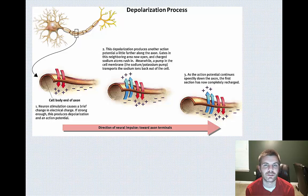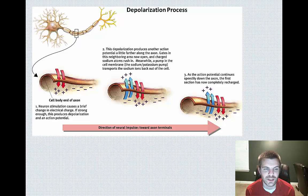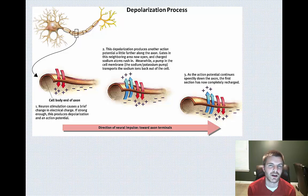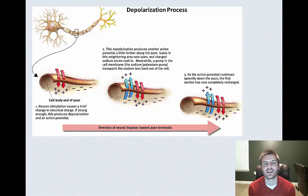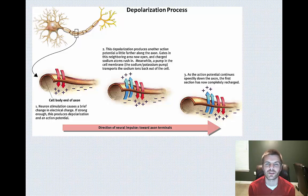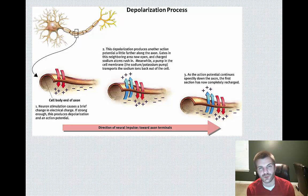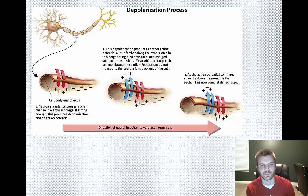Here's a diagram of the depolarization process. You can pause the video to read the details, but basically it's going to tell you the same thing: sodium ions rush in, making the charge less negative or even positive. As a result, the charge has changed — it's become depolarized — and this allows the firing of an action potential that continues to travel through the axon and terminal branches, eventually helping to release a neurotransmitter.